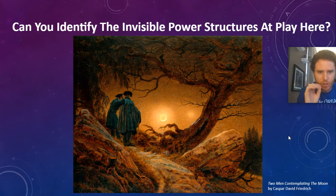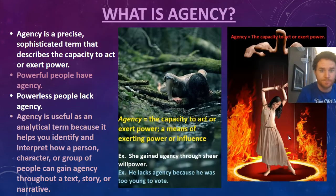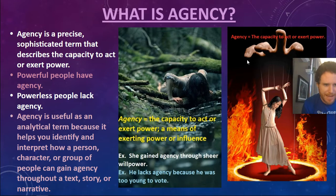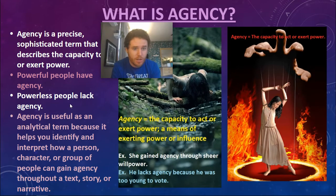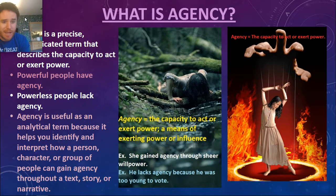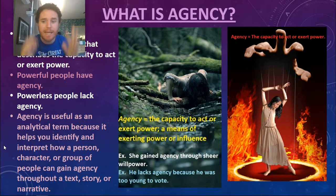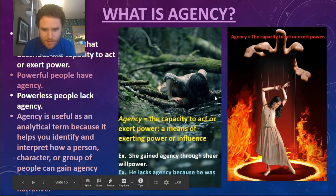We're training ourselves to look for these invisible power structures in life and in literature. A good fancy concept to look at is agency — a college term used a lot in academic writing. Agency is that precise, sophisticated term that describes the capacity to act or exert power. Powerful people have agency. Powerless people lack agency. Agency is useful as an analytical term because it helps you identify and interpret how a person, a character, or a group of people can gain agency throughout a text — incrementally, piece by piece — resisting or confronting the invisible power structures that control and limit them.